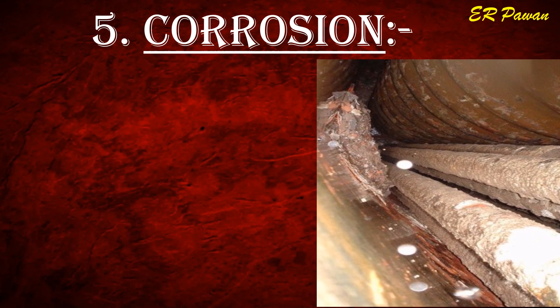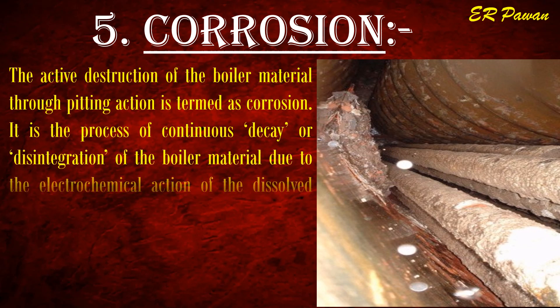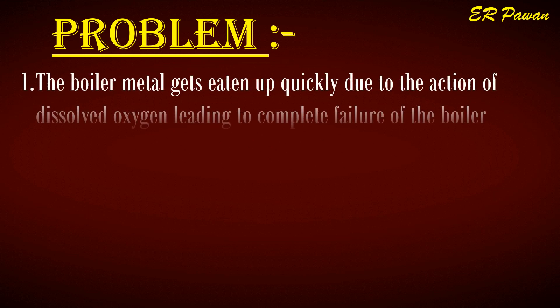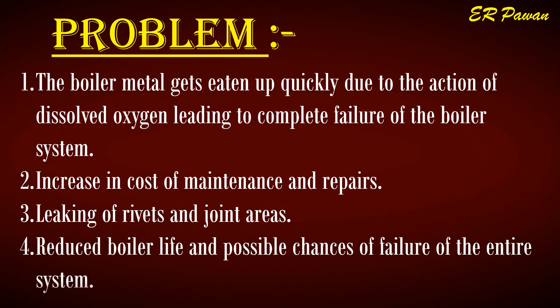Problem five: corrosion. The active destruction of boiler material through pitting action is termed as corrosion — it is the process of continuous decay or disintegration of boiler material due to the electrochemical action of dissolved oxygen with the boiler metal. Corrosion leads to rusting of ferrous metals. Problems: one, boiler metal gets eaten up quickly due to dissolved oxygen, leading to complete failure of the boiler system; two, increase in cost of maintenance and repairs; three, leaking of rivets and joint areas; four, reduced boiler life and possible failure of the entire system.